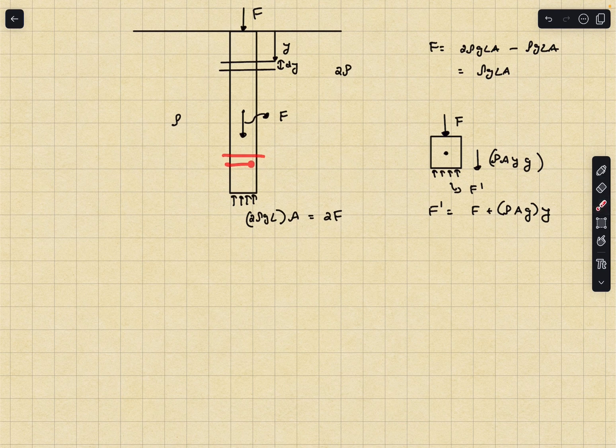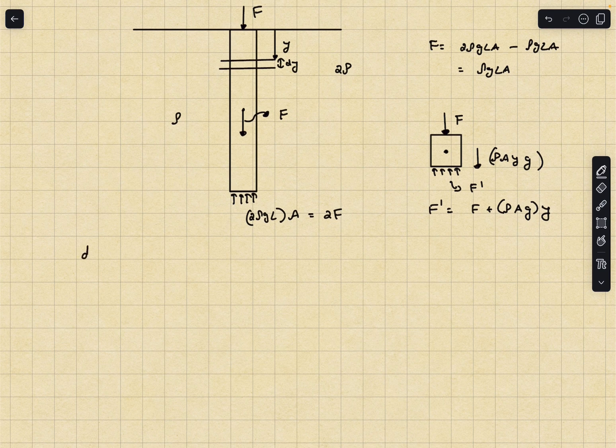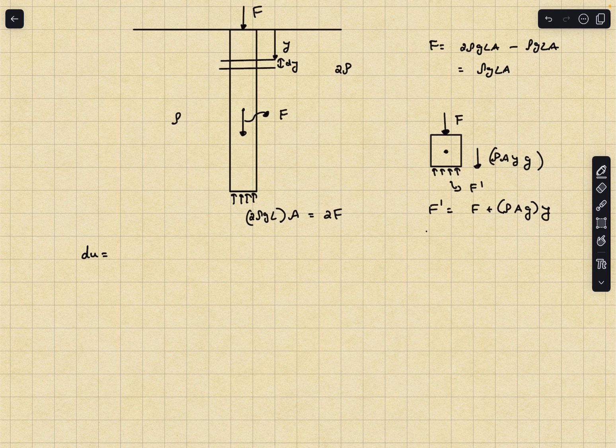With that we can also see that as we go down further and further the compression in each of the small dl lengths of the rod is going to be more and more. If I take a small element over here let's call it as dy. Obviously this dy is going to get compressed as well, but as the y increases the compression will also increase. The compression at this section is going to be greater because the compressive stress is greater.